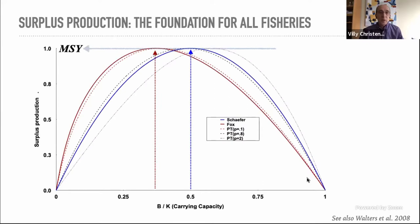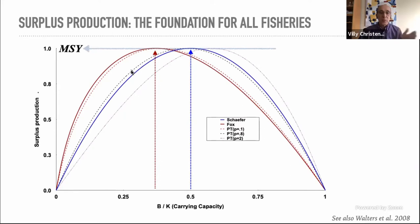The Schaefer model in dark blue has maximum production at half the carrying capacity. With the Pella-Tomlinson model you can adjust the exponent to fit your data and shift the peak. The Fox model shifts the peak surplus production down to around 30–40% of carrying capacity. These are the shapes we're modeling when we approach maximum sustainable yield.